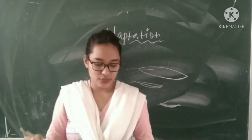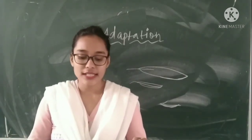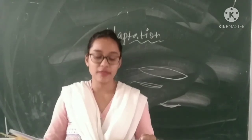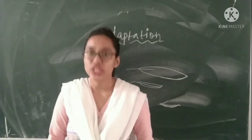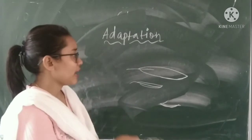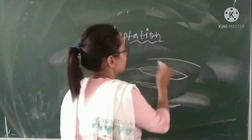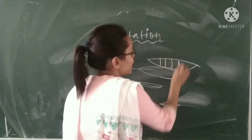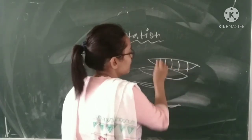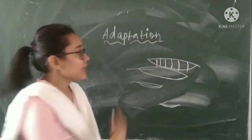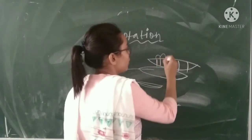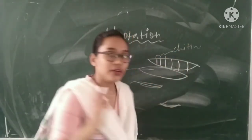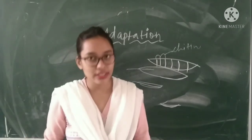Hard body covering: insects such as grasshopper and cockroach have a hard body covering made of a substance called chitin. If you catch one, you will find that their body is covered with a lined structure made of chitin, which is very hard to touch, like plastic.